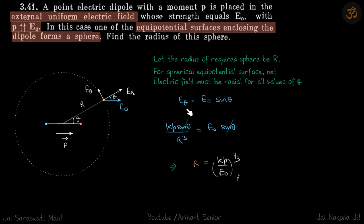E theta is equal to E naught sine theta. The horizontal components must cancel out. This is the external electric field, and E theta is due to the dipole. Perpendicular to the radial direction, the fields should cancel out.